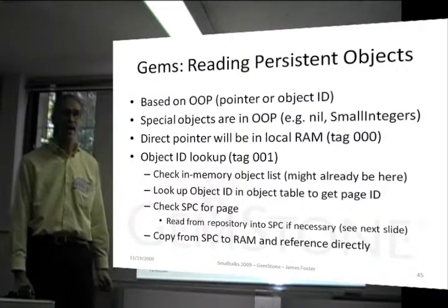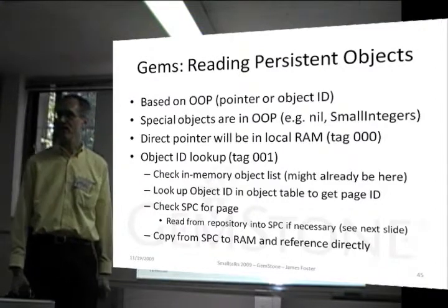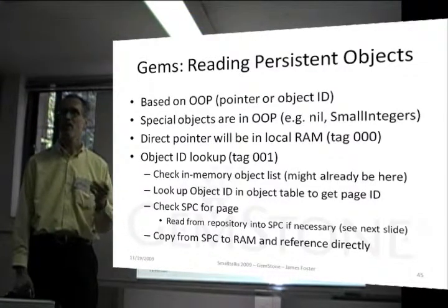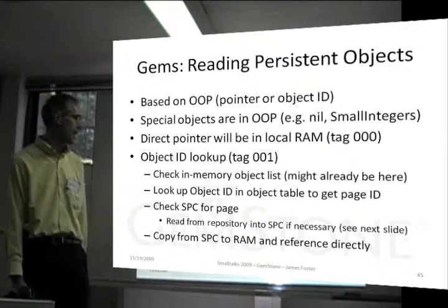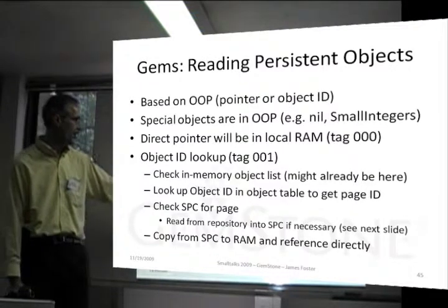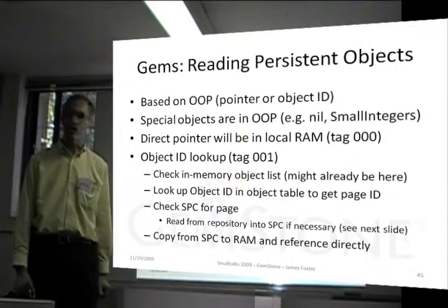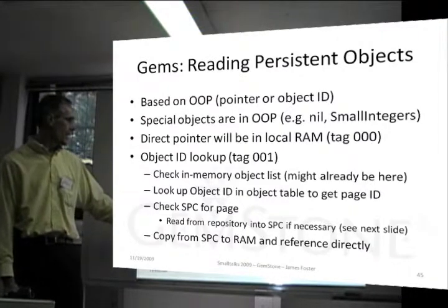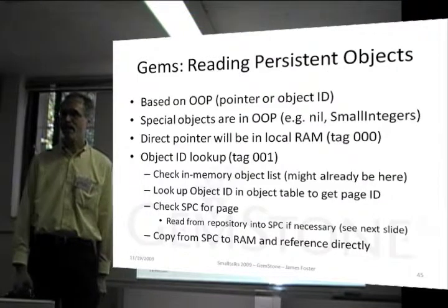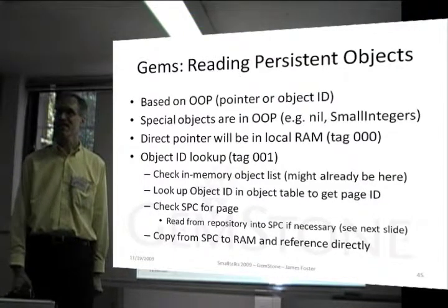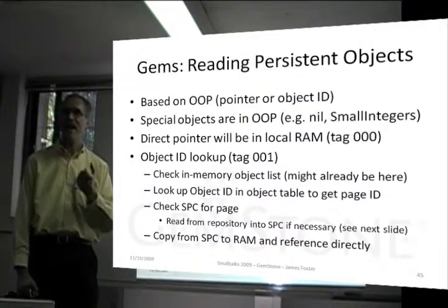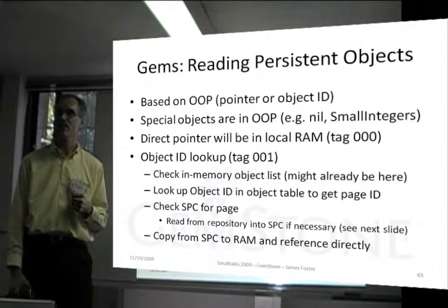If the tag is 001, then we know that the object is in the repository. It could be in memory in the shared page cache, but we need to look it up through the object table. So we take the object ID, go to the object table to find out what page it's on, then go to the shared page cache and ask: is this page already in memory?